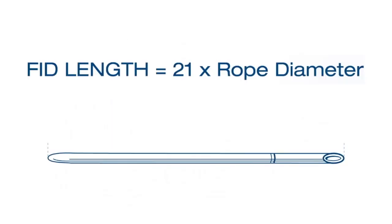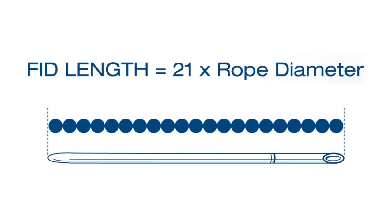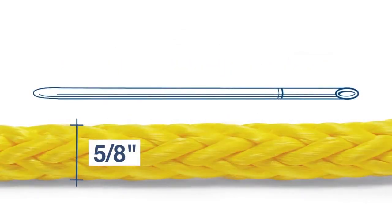We'll be using a tubular fid for this splice and for measuring the marks. A fid length is equal to the diameter of the rope multiplied by 21. For the 5 eighths inch rope used in this example, that works out to 11 inches.